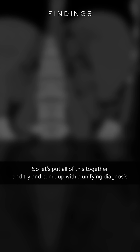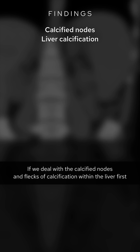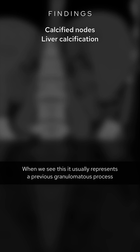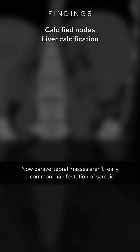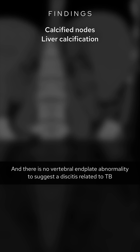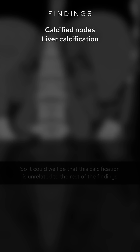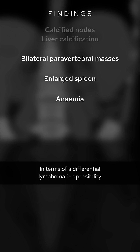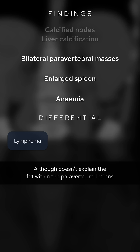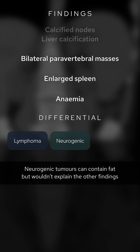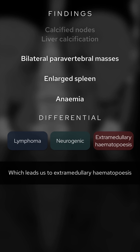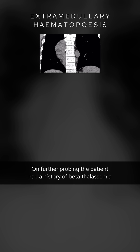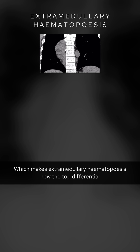Let's put all of this together and try to come up with a unifying diagnosis. Dealing with the calcified nodes and flecks of calcification within the liver first — when we see this it usually represents a previous granulomatous process, such as sarcoid or previous infection including TB and histoplasmosis. Paravertebral masses aren't a common manifestation of sarcoid, and there is no vertebral end plate abnormality to suggest a discitis related to TB, so this calcification could be unrelated to the rest of the findings. Otherwise we have bilateral fat-containing paravertebral masses, an enlarged spleen, and possible anemia. Lymphoma is a possibility but doesn't explain the fat within the paravertebral lesions. Neurogenic tumors can contain fat but wouldn't explain the other findings, which leads us to extramedullary hematopoiesis. On further probing, the patient had a history of beta thalassemia, which makes extramedullary hematopoiesis now the top differential.